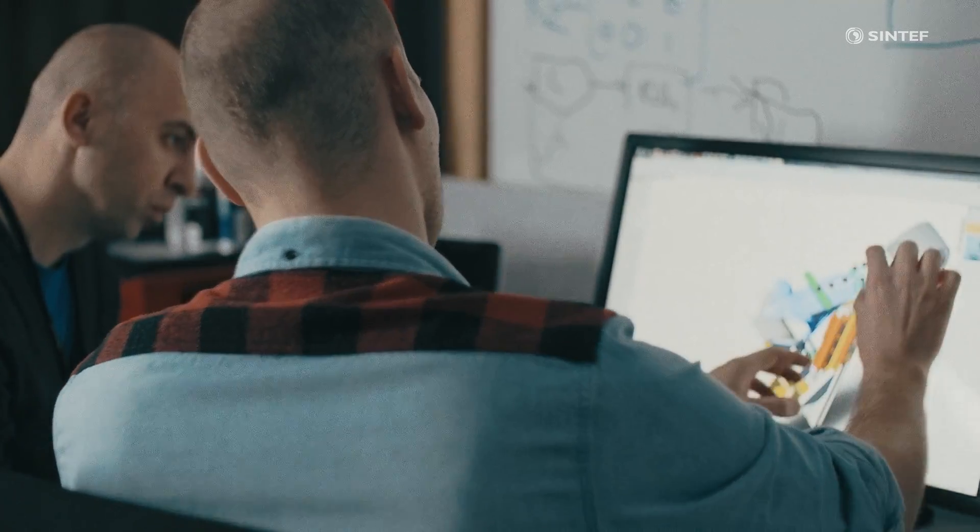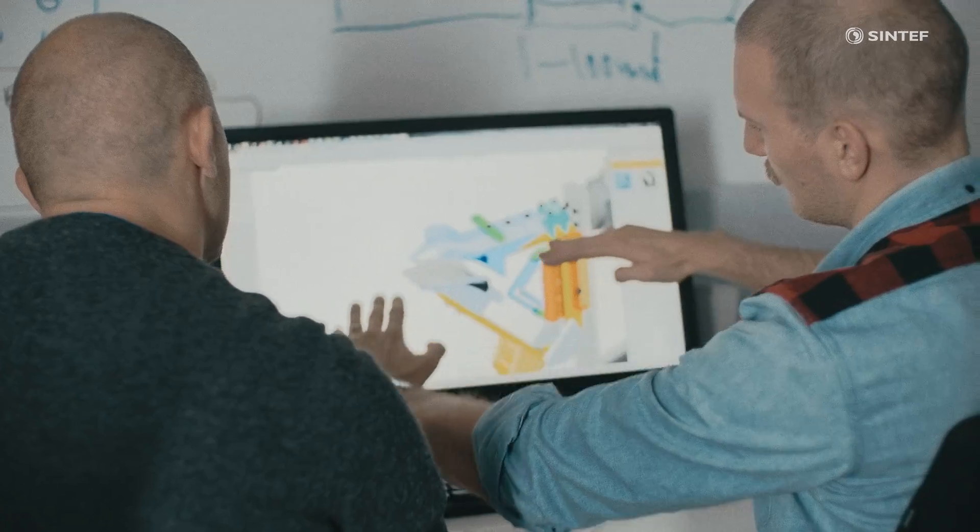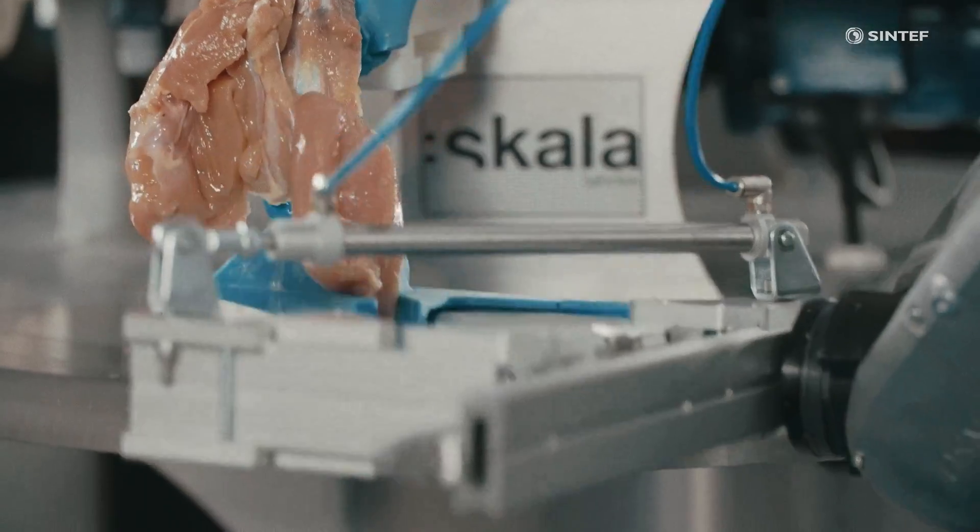The most challenging aspect in this research was the development of the gripper. Due to the variations in mechanical properties and texture of the chicken meat, the gripping of fillets may get very challenging as they become very slippery.